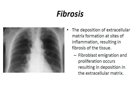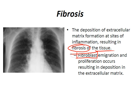Fibrosis is the deposition of extracellular matrix at sites of inflammation, resulting in fibrosis of tissue. Fibroblasts emigrate and proliferate, resulting in deposition in the extracellular matrix. It takes seven days before fibroblasts show up at a site of inflammation.